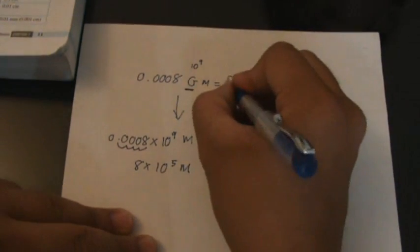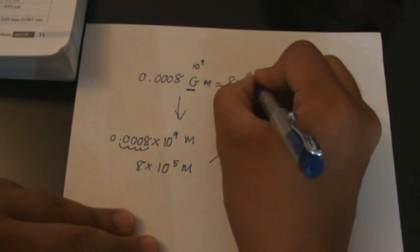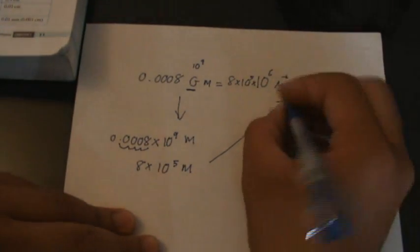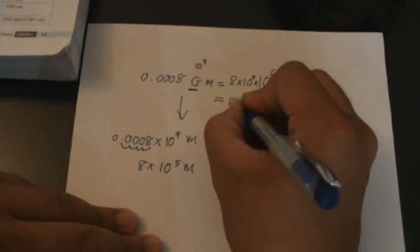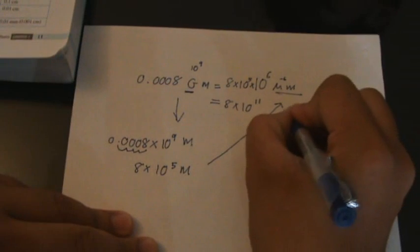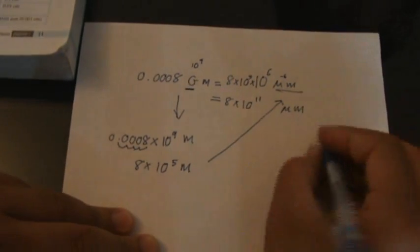So that I can put in my 8 times 10 power of 5. So I will get 8 times 10 power of 5 plus 6 is 11. So you get micrometer. 8 times 10 power of 11 micrometer.